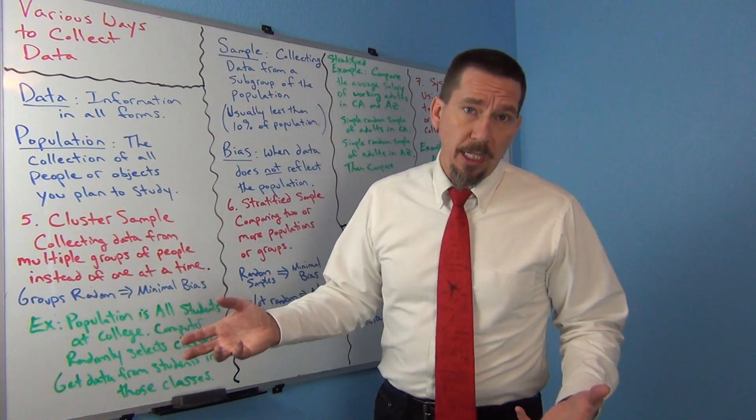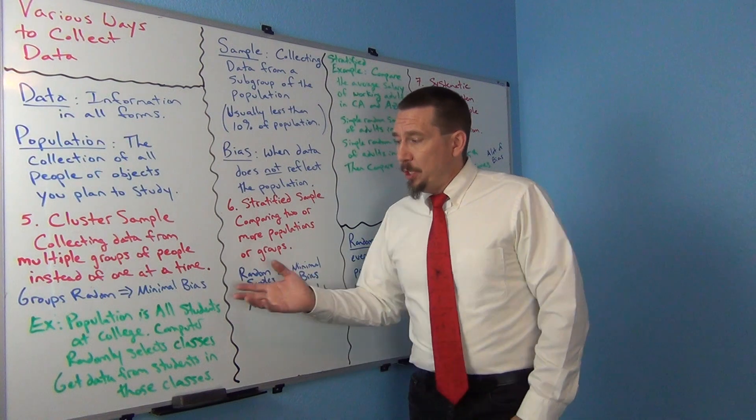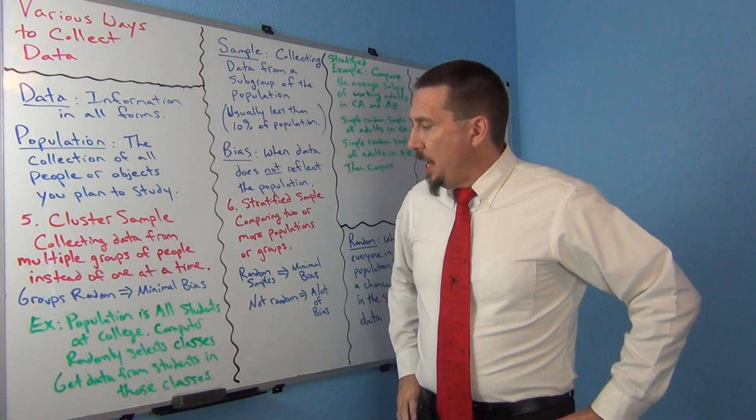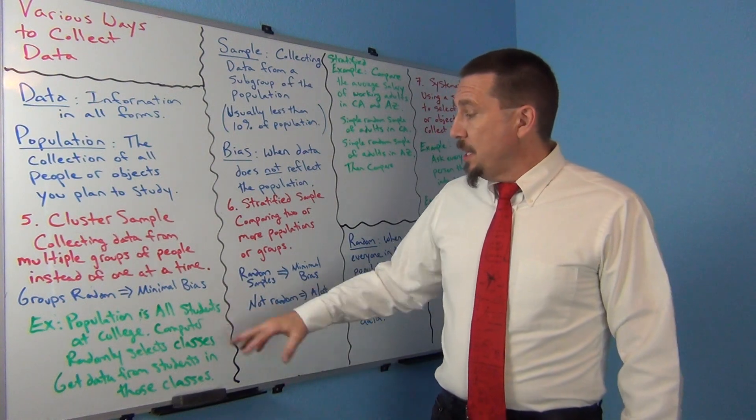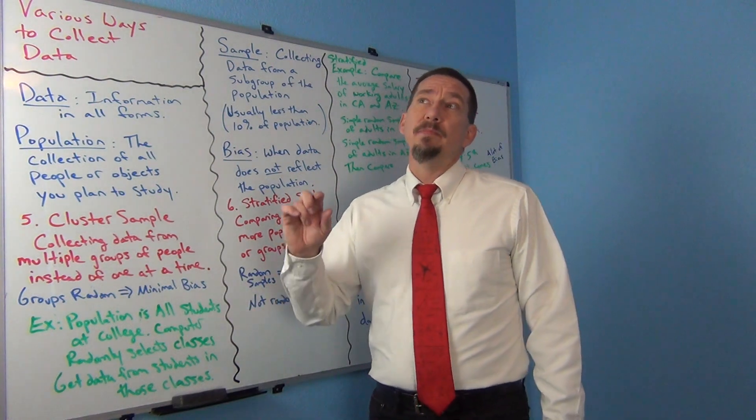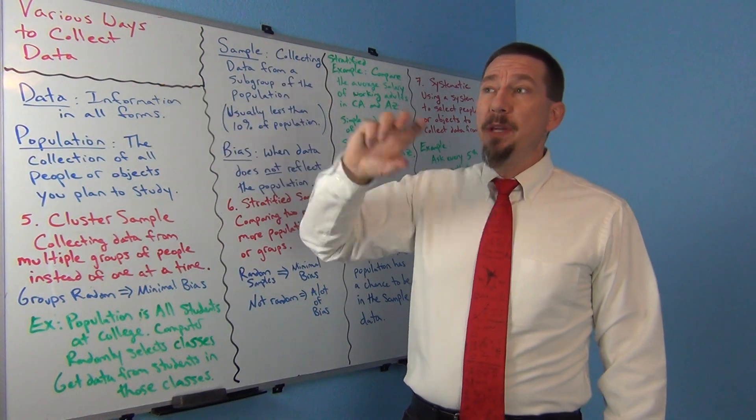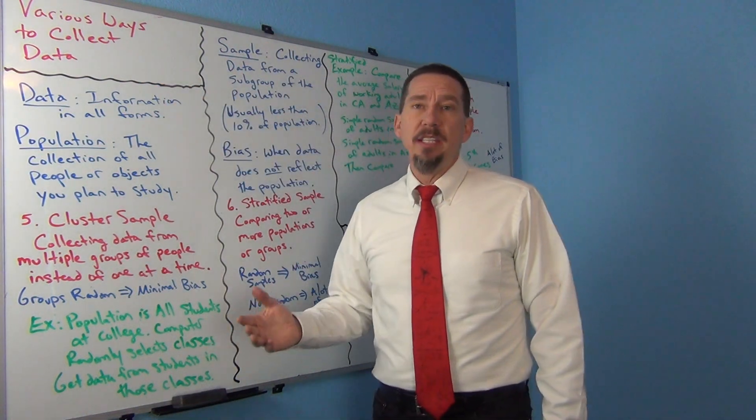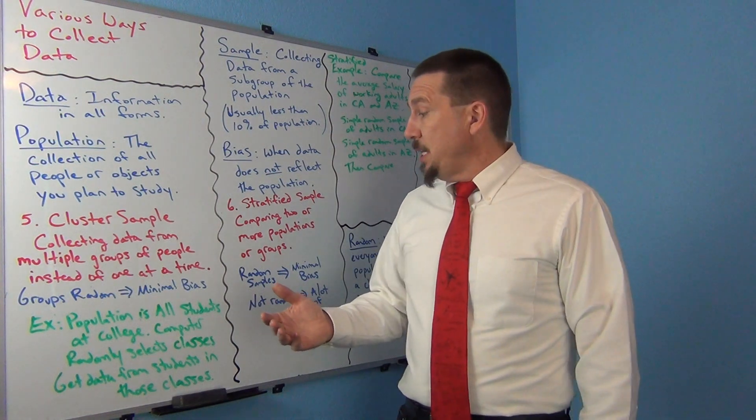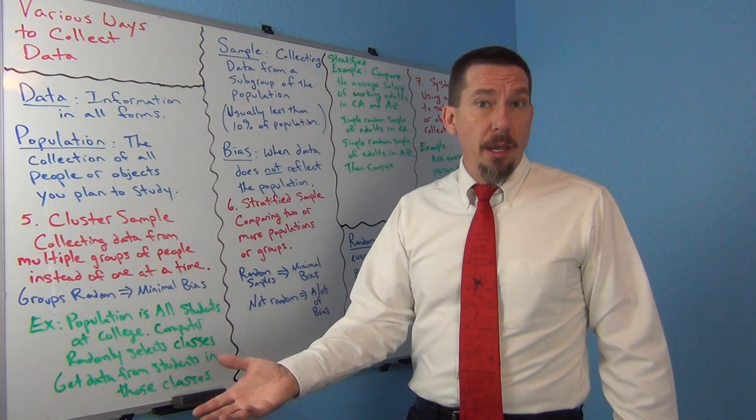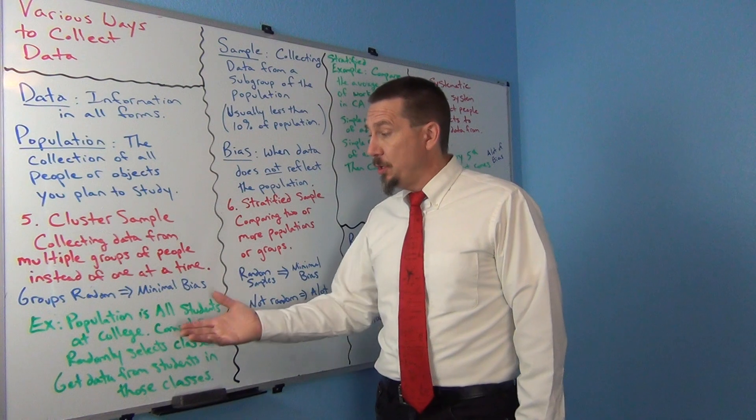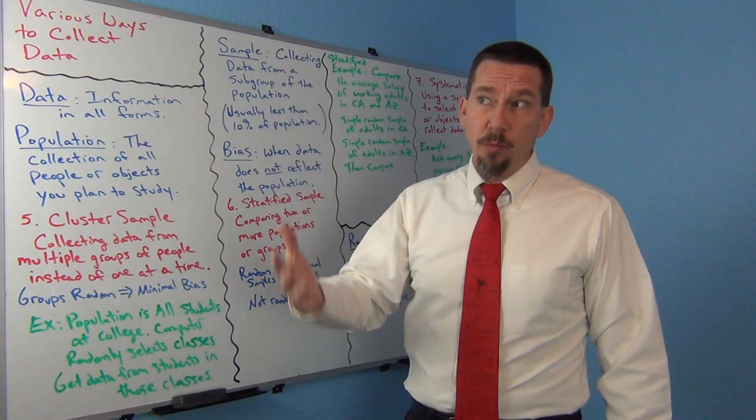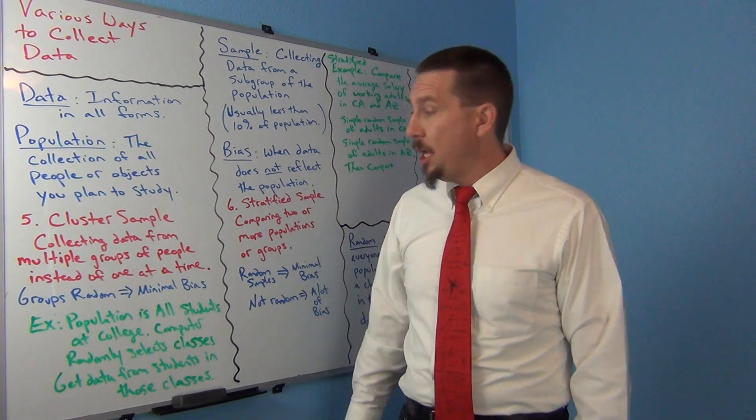So if you're going to collect data from groups of people in a cluster sample you want to pick the groups randomly. For example, let's suppose that our population is all students at the college. Instead of me picking student ID numbers and picking one student at a time, maybe I can have the computer randomly select the section number of the class. Or if I had a column of data that had all the classes I could just have a computer randomly select cells out of that column.